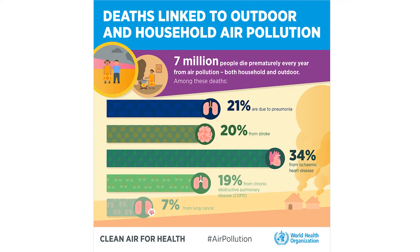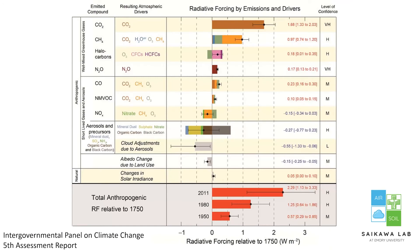Even though residents didn't consider it air pollution, they did worry a lot about climate change. That made me think more about the links between climate change and air pollution. Aerosols have a lot of impact on climate — this slide from the IPCC Fifth Assessment Report shows the energy difference between what's coming in to Earth and what's going out. A positive value means more energy is stuck in the atmosphere, so it's warming. If it's negative, there is more going out, so it's cooling.